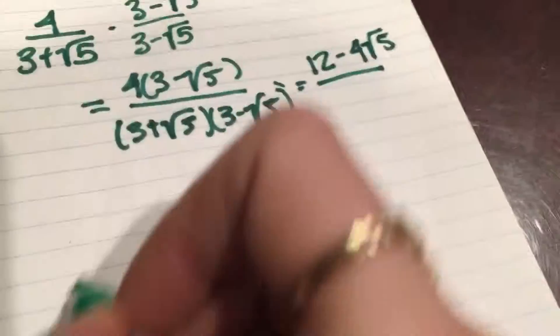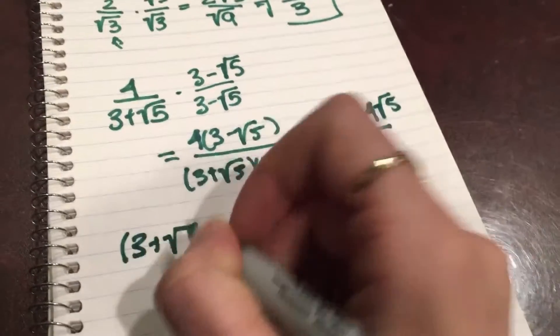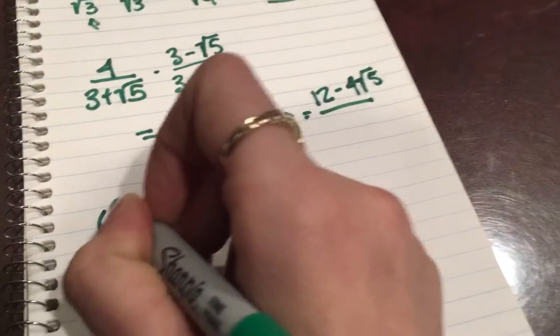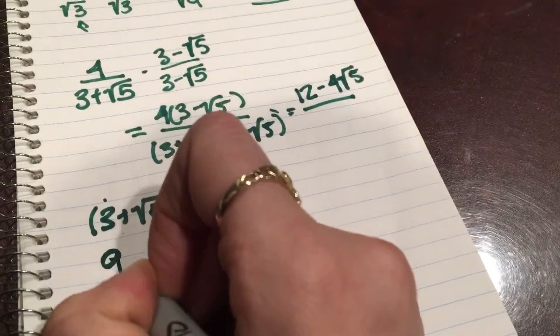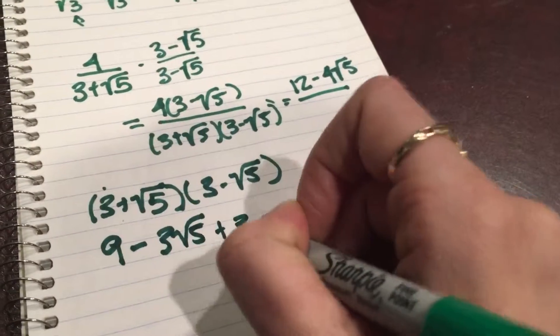Now for the bottom we're gonna do the work over here. So we have 3 plus radical 5 times 3 minus radical 5. If I FOIL, we'll have 3 times 3 is 9, minus 3 square root of 5, plus 3 square root of 5.